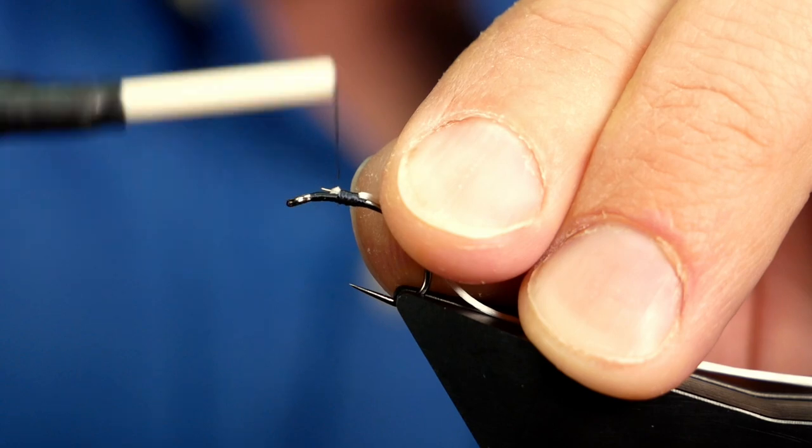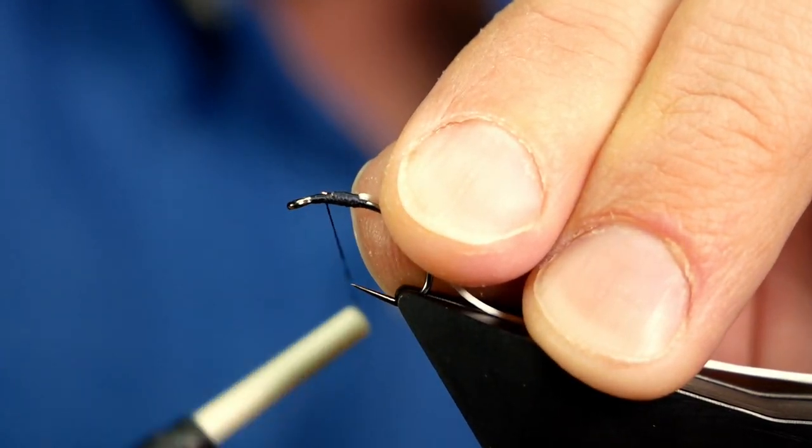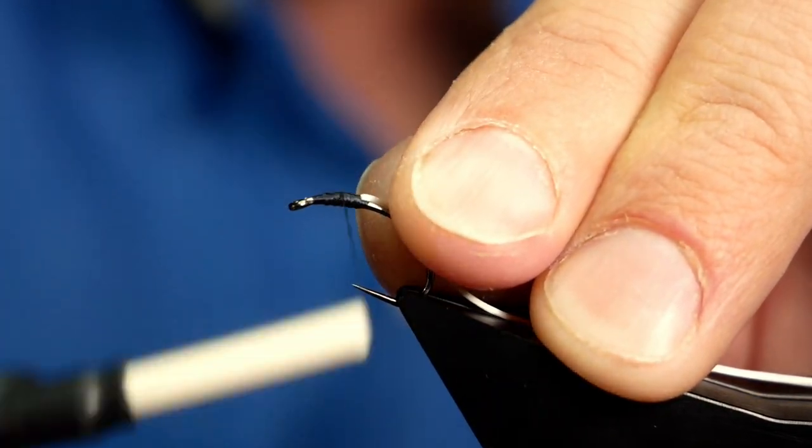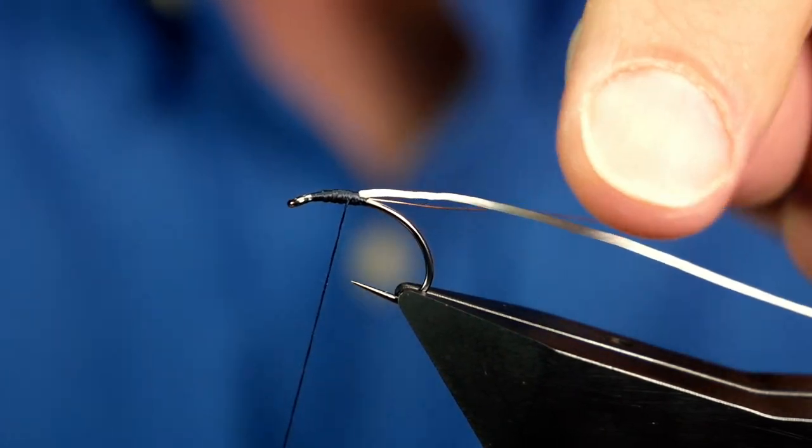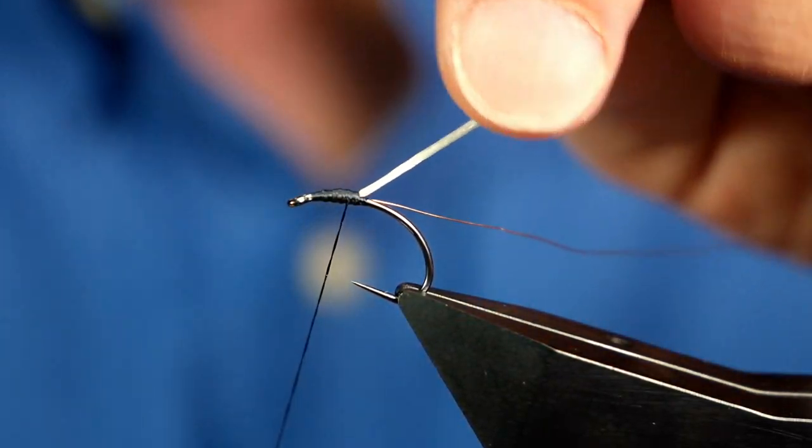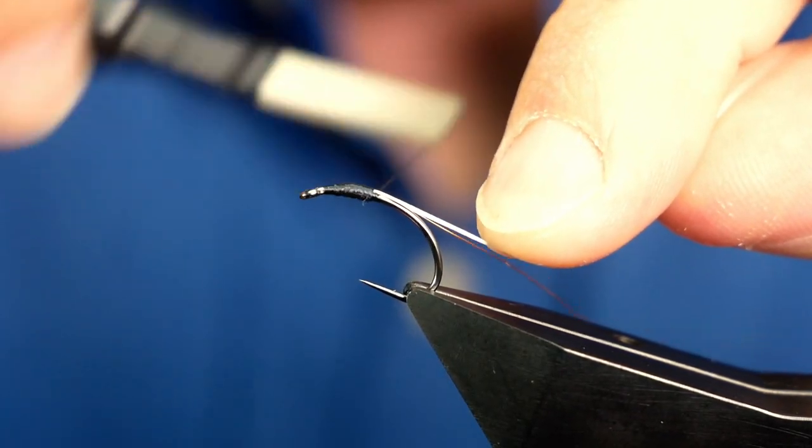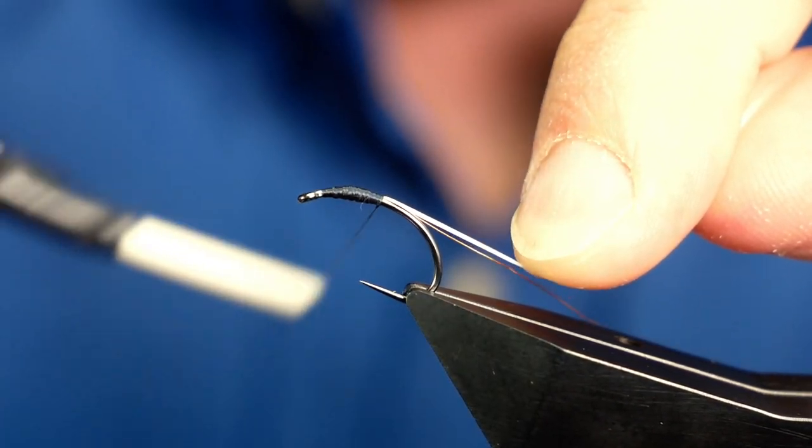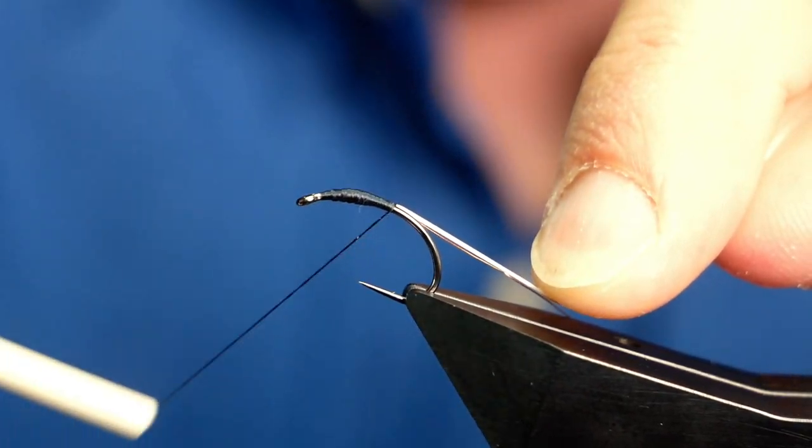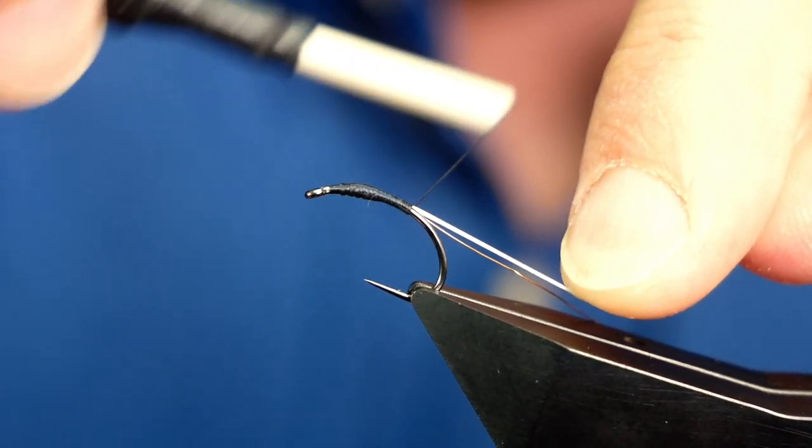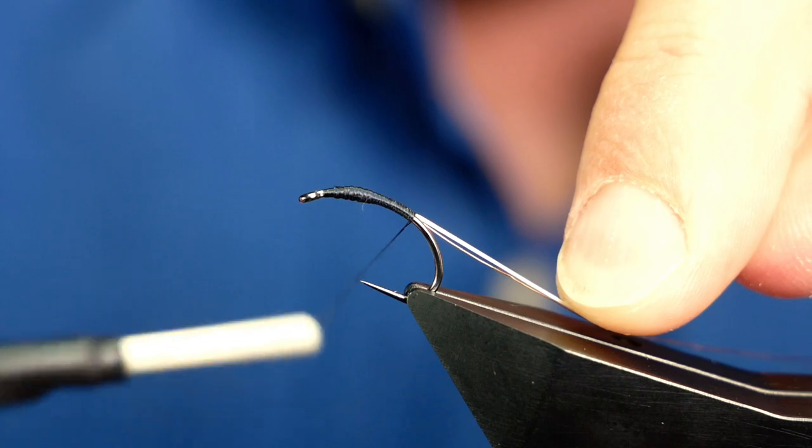Now I'm not bothered about the bulk I'm creating up here because I'm going to have a fairly large thorax. Now when I come down I want to start to stretch out the flexi-floss just to get a nice taper.